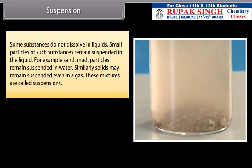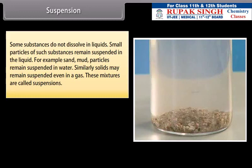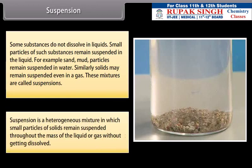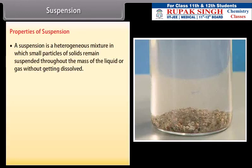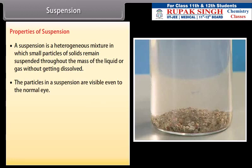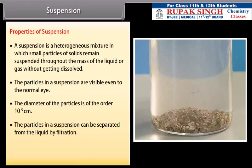Some substances do not dissolve in liquids; small particles of such substances remain suspended in the liquid. For example, sand and mud particles remain suspended in water. Similarly, solids may remain suspended even in gas. These mixtures are called suspensions. Suspension is a heterogeneous mixture in which small particles of solids remain suspended throughout the mass of the liquid or gas without getting dissolved. The particles in a suspension are visible even to the normal eye, and the diameter of the particles is of the order 10⁻⁵ cm. The particles in a suspension can be separated from the liquid by filtration, and they will settle down on standing.